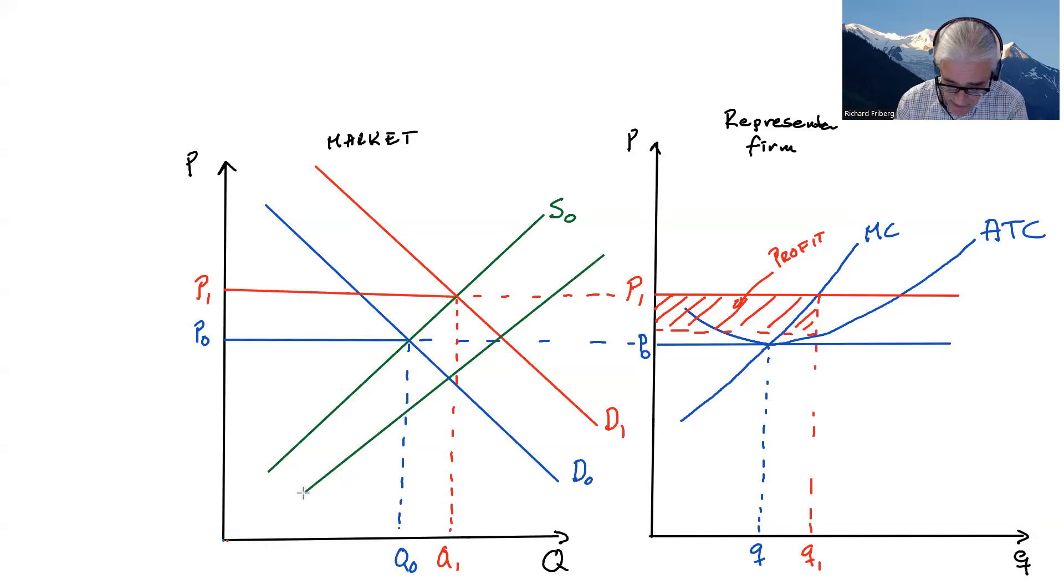So if there's free entry and new firms can perfectly replicate what existing firms are doing, we will have supply shifting. So new firms are shifting supply to S2 here, all the way to this point where we have Q2, we're back to P0 and P2, we're back to the original price.